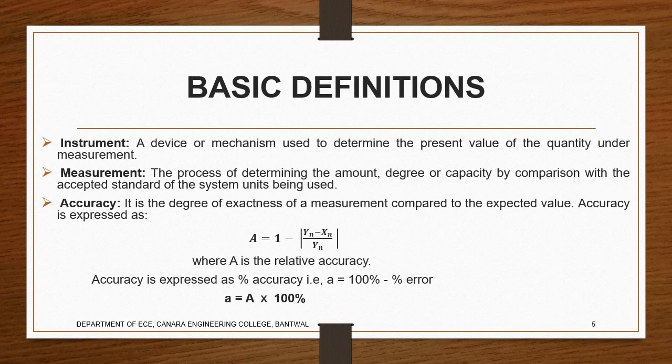Now getting into the basic definitions. We will brush up some of the basic concepts which will be useful for us. First we look into the instrument. As the name suggests, an instrument is a device or mechanism used to determine the present value of a quantity under a measurement process. What we are doing is taking an instrument and measuring something — that we call an instrument. It might be a voltmeter, ammeter, etc.